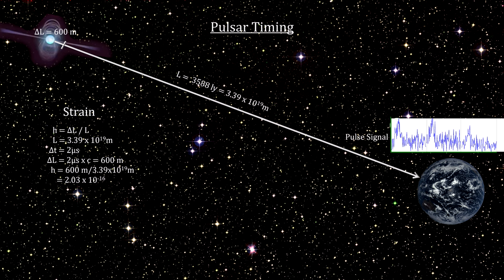One of the keys to the success of the method is the extremely accurate measurement of each pulse's arrival at the radio telescope, called the time of arrival, or TOA for short. Given the arrival time of one pulse, we would just add the pulsar rotation time to calculate the expected time of arrival for the next pulse, with a few adjustments for things like the Earth's rotation, the orbital motion of the Earth and the pulsar if it's in a binary system, the dispersion delay caused by electrons in the interstellar medium, and a few additional relativistic effect items.